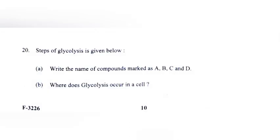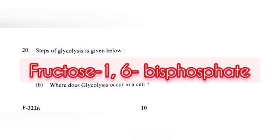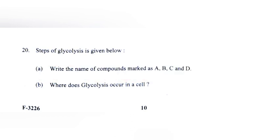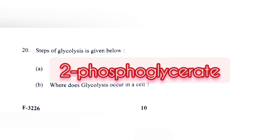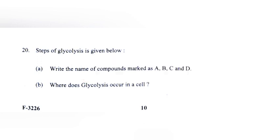Steps of glycolysis are given below. A) Write the name of compounds marked as A, B, C, and D. Answer: A — glucose-6-phosphate, B — fructose-1,6-bisphosphate, C — 2-phosphoglycerate, D — pyruvic acid. B) Where does glycolysis occur in a cell? Answer: cytoplasm.